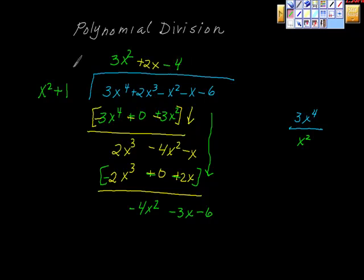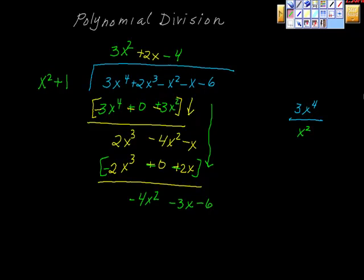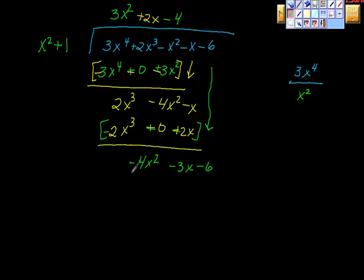Negative 4 times x squared is negative 4x squareds. Let me move this down a little bit. So here's negative 4x squareds. Makes sense. Here we have negative 4 times positive 1 is negative 4, isn't it?